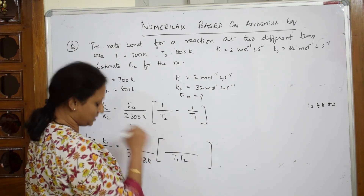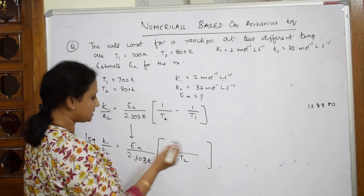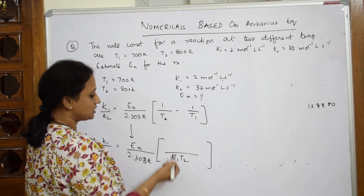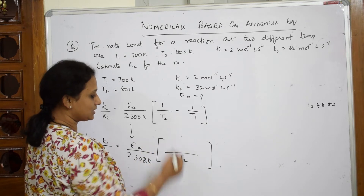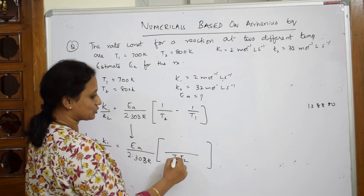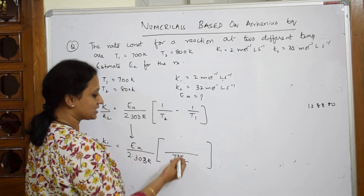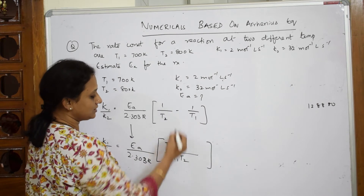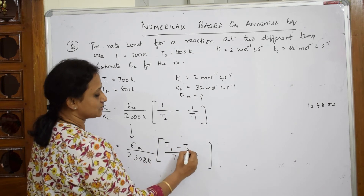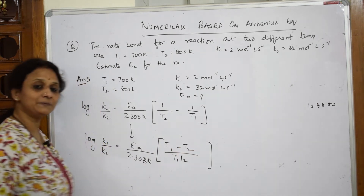After taking LCM for the temperature terms 1/T1 minus 1/T2, this simplifies. If I cancel, I get T1 minus T2 in the numerator.